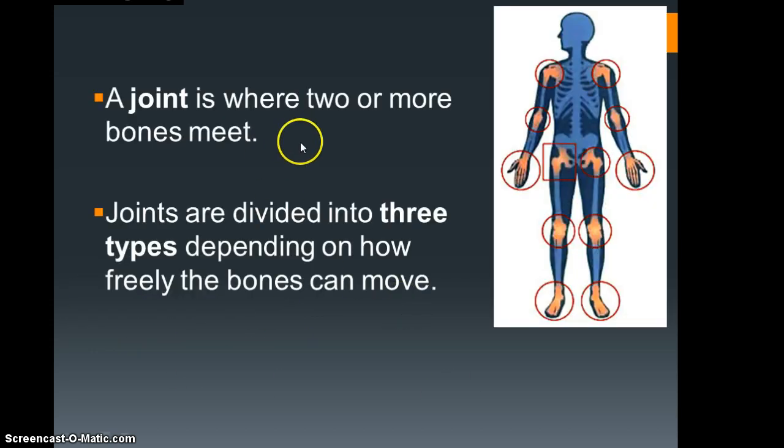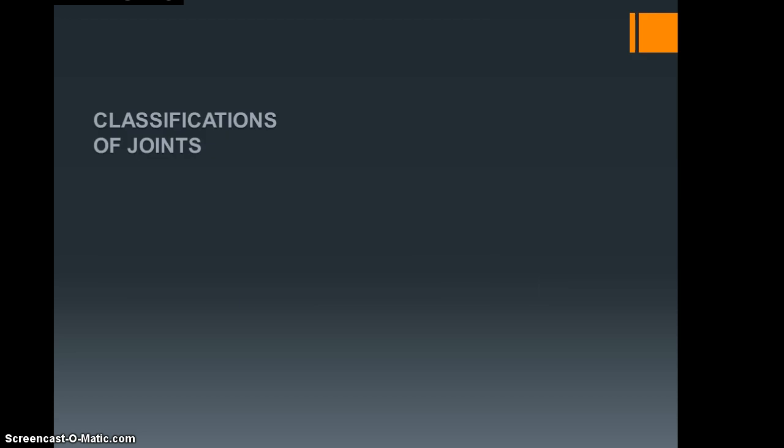A joint is where two or more bones meet, and joints are divided into three different types depending on how freely the bones can move. This is assumed knowledge from your GCSEs. We expect you to have covered this at GCSE level, so it should be an element of revision, and I'm going to go through it quite quickly. If you do have issues or problems, feel free to pause the screencast and take notes, but hopefully this will be more of a revision session for you.